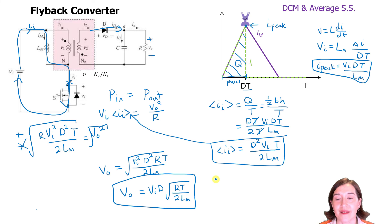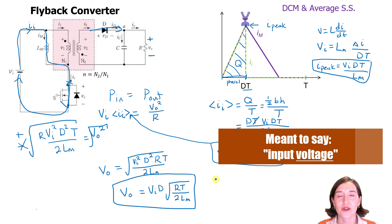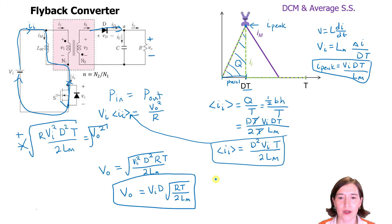So this is the voltage relationship. We know the input current, the duty ratio, the resistor, the time period, and the magnetizing inductance value.